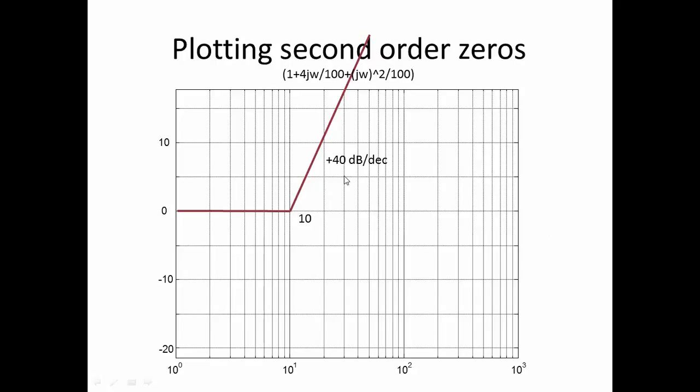The second order zero is at 10 radians per second, and it goes up at 40 dB per decade. Again, I'm just doing straight line approximations for this.